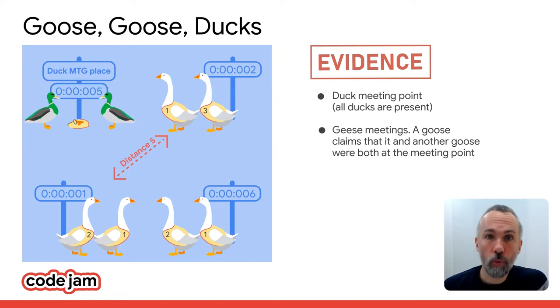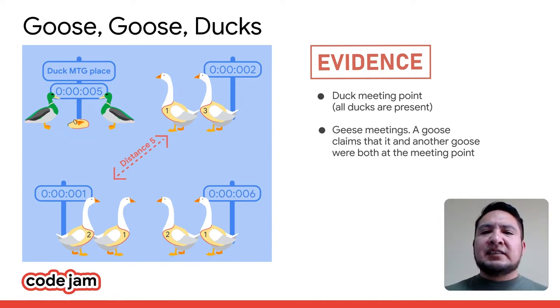Well, the good geese never lie, but the evil ducks can. However, we know that the duck will never contradict an earlier piece of testimony given by a goose. So, in this case, someone lied about where Goose One was. Can we figure it out who it was?